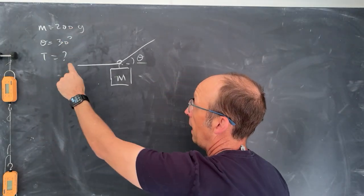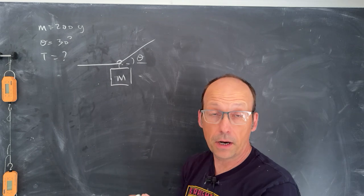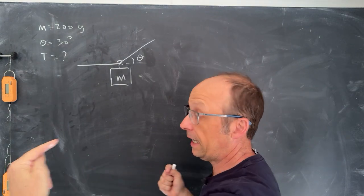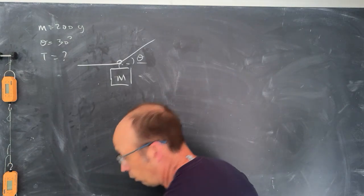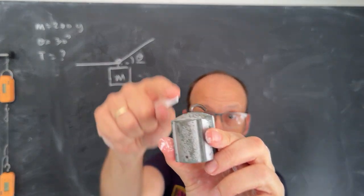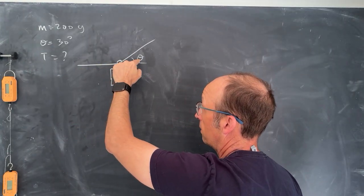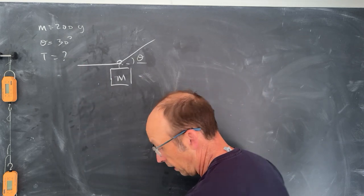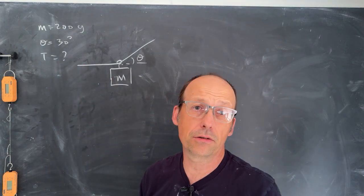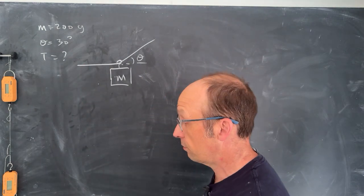I had a 200-gram mass hanging from a string, and the string passed through a hole in it like this. It's a single string and went through. It's horizontal right there and then at a 30-degree angle up there. Let's just pretend like we're solving the problem like a student. I want to find the tension in the string.